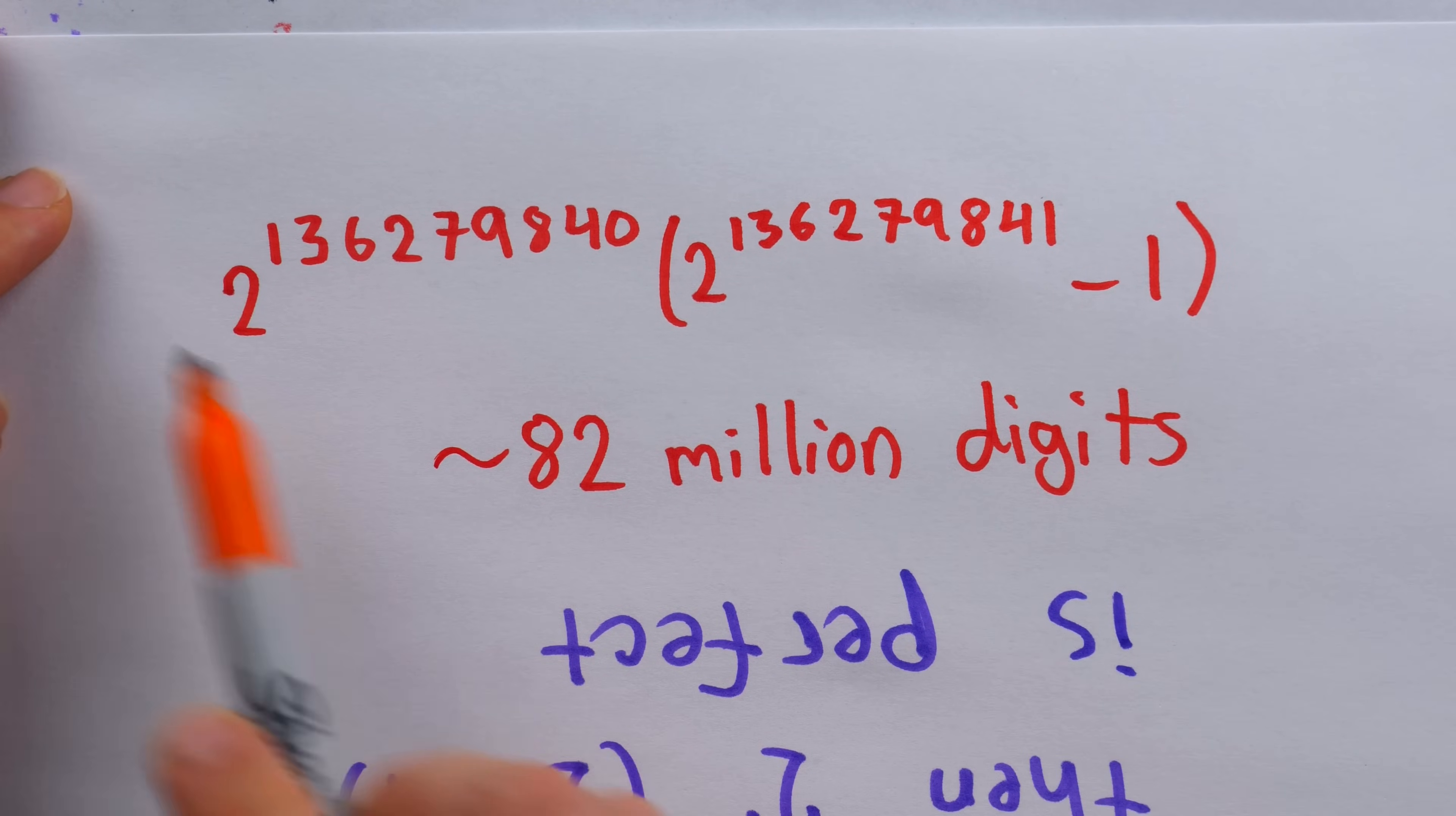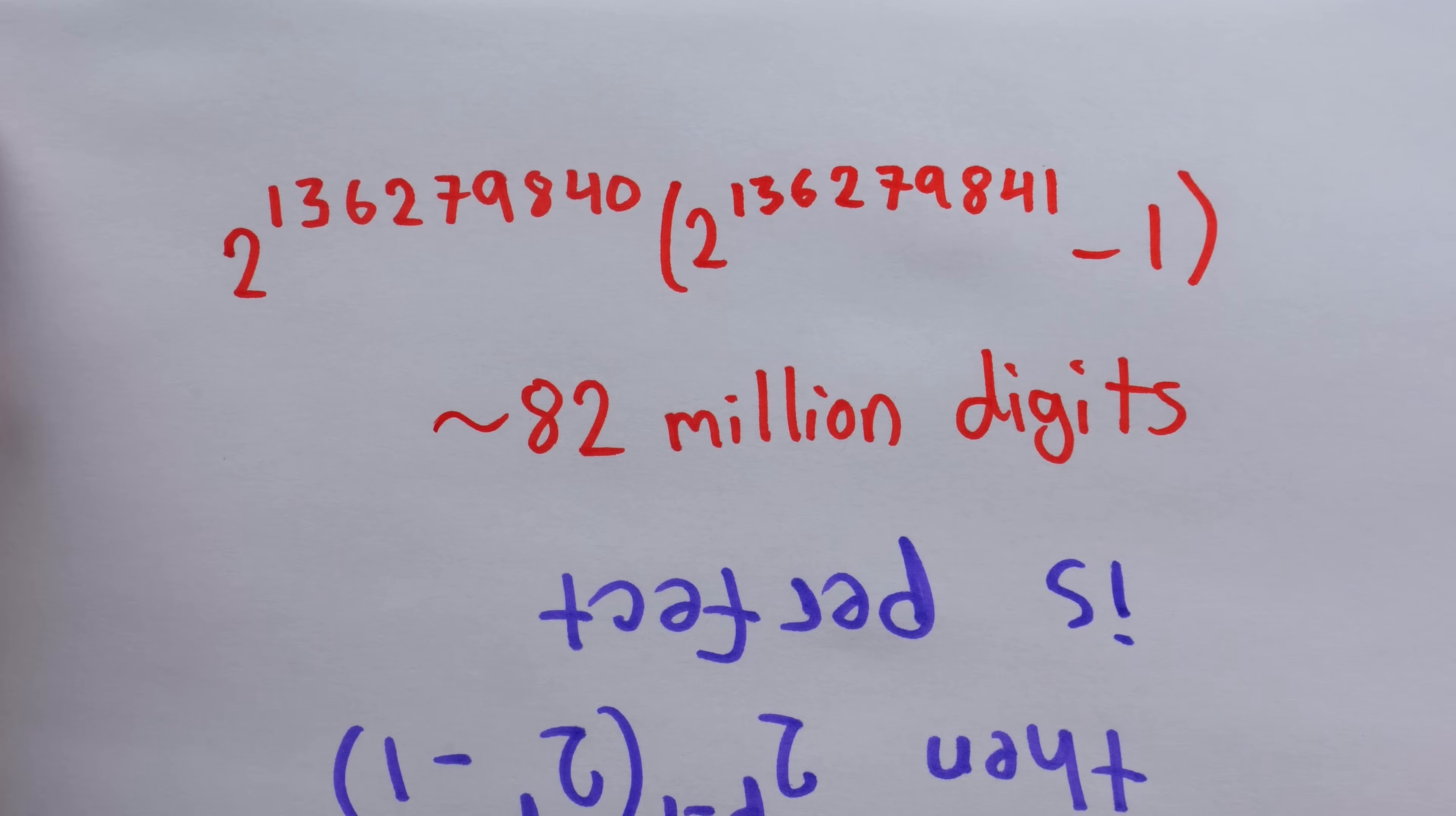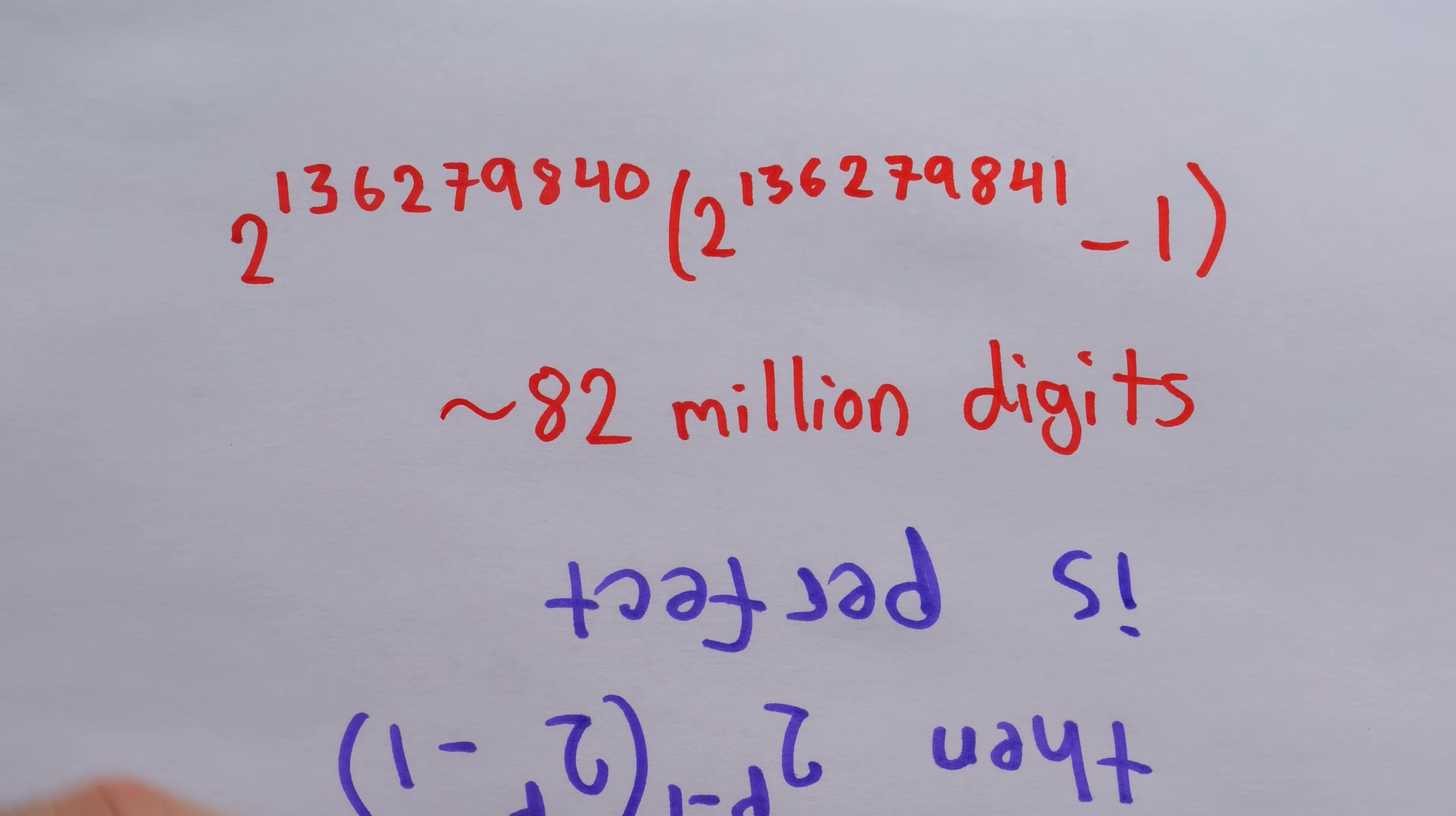So that's our new largest perfect number, this product, which has about 82 million digits. It's absolutely colossal.